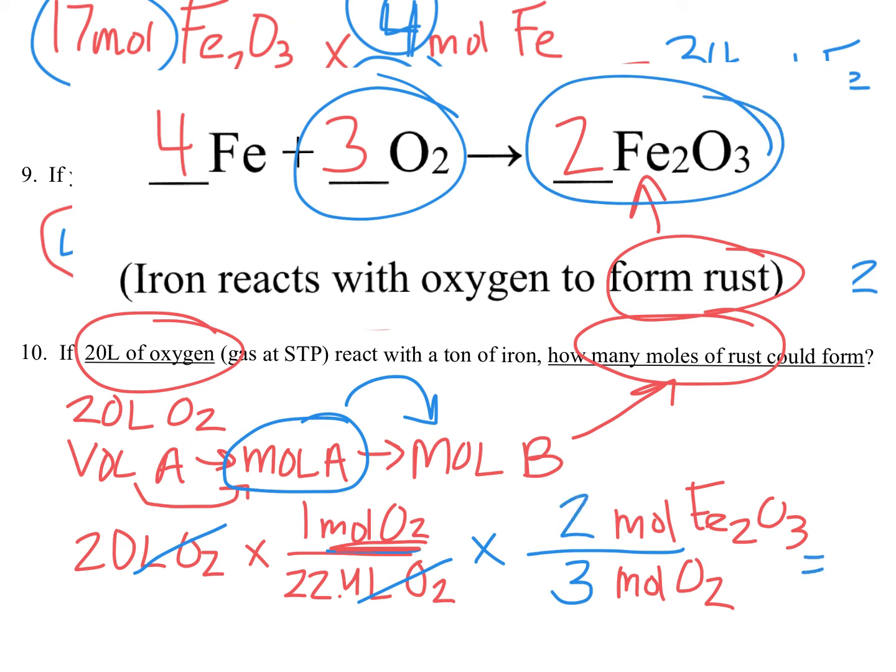So even though this was slightly different than what we've been doing, these are all the skills you already have. We're going to take 20, multiply by 1, divide by 22.4, multiply by 2, divide by 3. And the answer we get is about 0.595 moles of Fe2O3, which is rust.